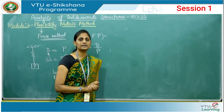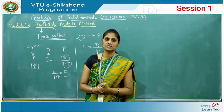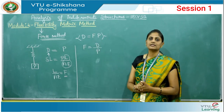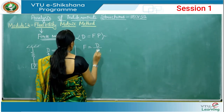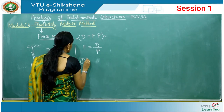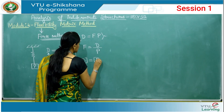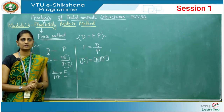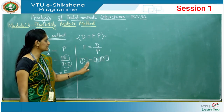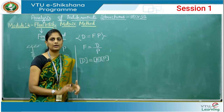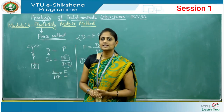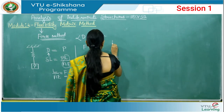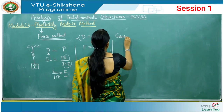If a structure consists of multiple degrees of freedom and is subjected to several loads, the displacement can be expressed in terms of force in the form of a matrix equation. Using the basic equation, we can write it in matrix format: matrix D equals matrix F into matrix P, where matrix D represents displacement, matrix F represents flexibility, and matrix P represents the applied force.